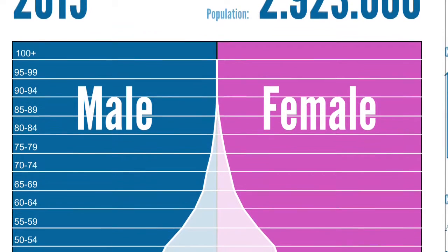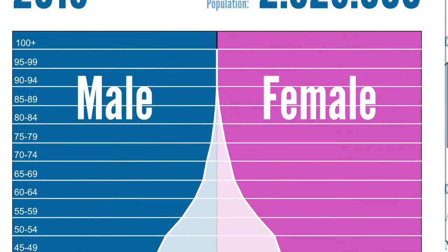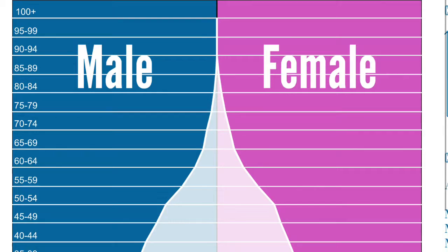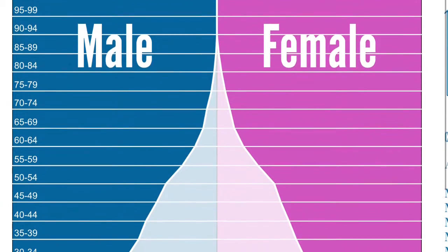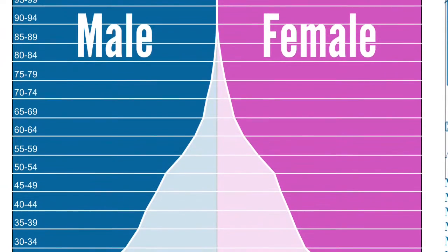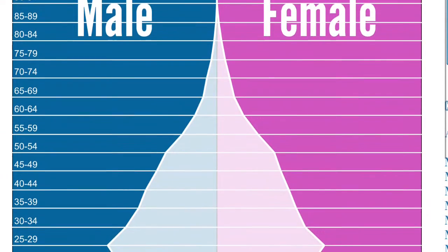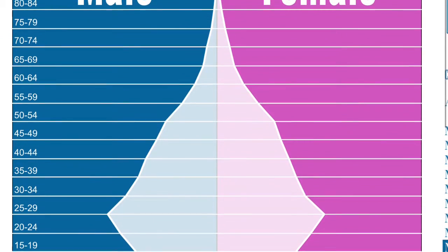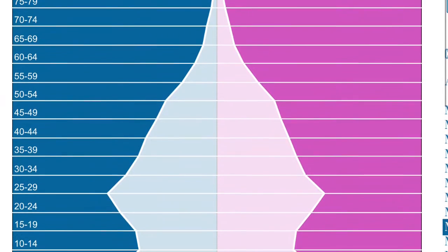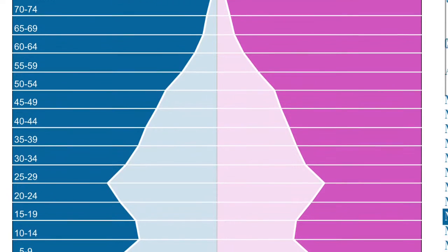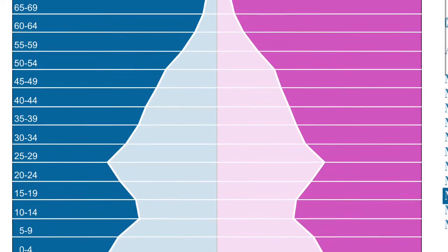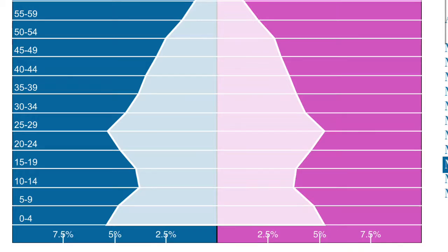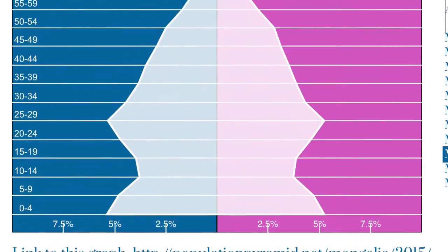Although the bottom of the pyramid looks like it's growing at a fast rate, the age group of 25 to 29 is rather large. This means that the future economy will need to be prepared to take care of a large group of elders. Mongolia is also the least densely populated country in the world due to its large amount of mountains and part of the Gobi Desert. Mongolia is the second largest landlocked country, which means none of it touches the sea.